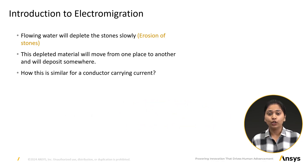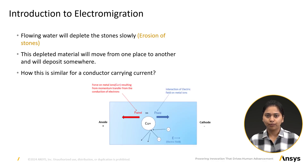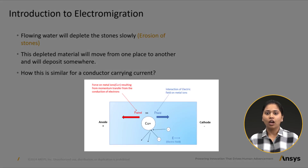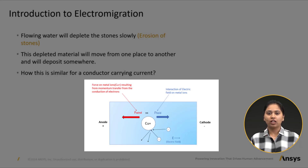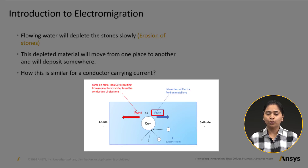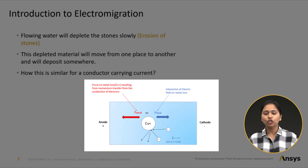Let us delve deeper into this concept. When an electron moves in a conductor under a certain voltage, it collides with its ions and transfers its momentum. This applies a force on the atom, denoted as F-wind. There is another force due to the electric field, denoted as F-field, which is in the opposite direction of F-wind. When F-wind is much greater than F-field, the ions will move from their original positions.